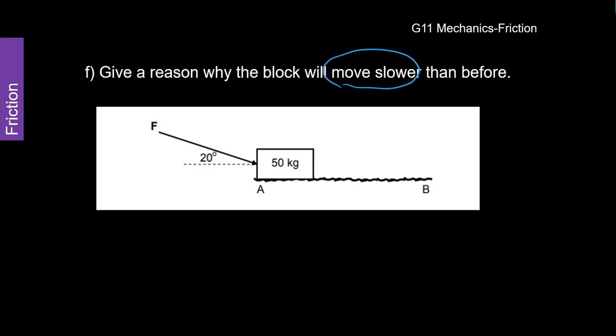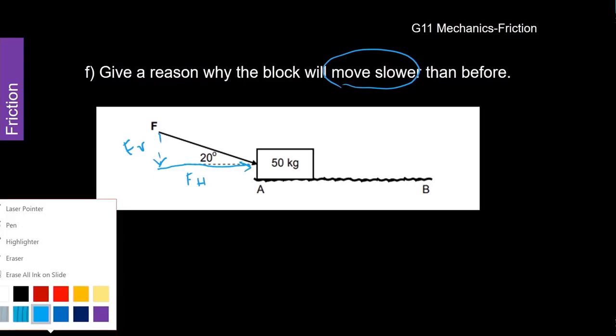So if we look here, we can see, if we break it up, we can see that we've got a vertical component, which is in the downward direction. And the horizontal component is the same as before. There we go. It's the horizontal component. I'm going to change my pen. I want to show you the other one.